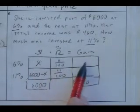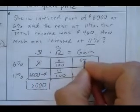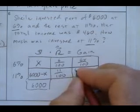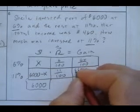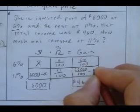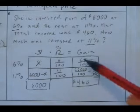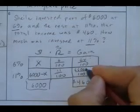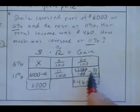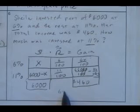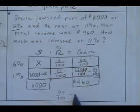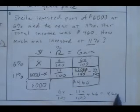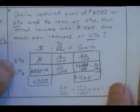Multiplying money times rate: x times 6 hundredths gives 6x over 100. For the 11% portion: (6,000 minus x) times 11 hundredths gives 66,000 minus 11x over 100, which reduces to 660 minus 11x over 100. The equation is: 6x over 100 plus (660 minus 11x) over 100 equals 460. Multiply both sides by 100 and solve for x.